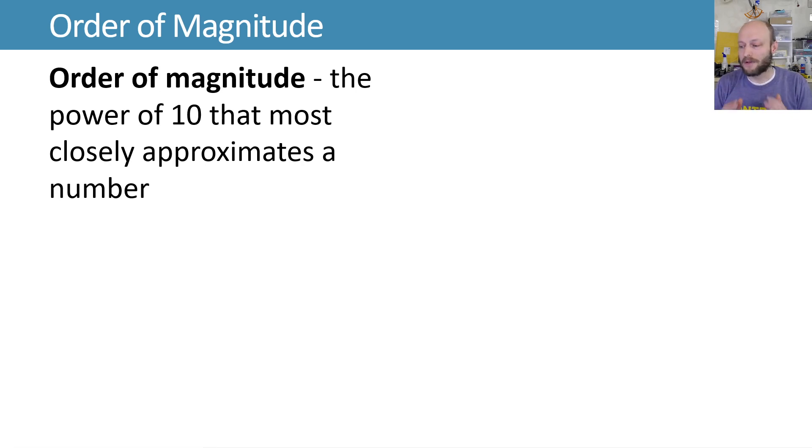When we talk about order of magnitude, it's the power of 10 that most closely approximates the number that we care about. For example, 10 to the first, 10 to the second, 10 to the third. This would be order magnitude 1, or 2, or 3. You might also say it as on the order of 10, or on the order of 100, or the order of 1,000, because 10 to the third is 1,000.